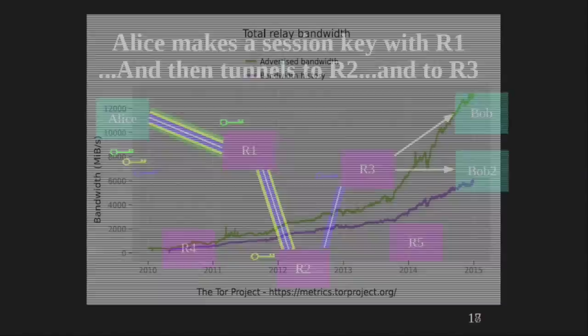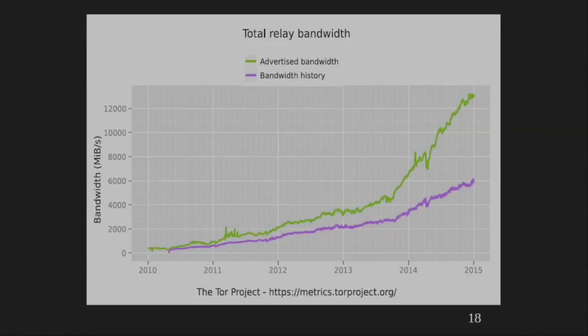We have about 7,000 volunteer relays out there right now all around the world. The question is not how many relays there are, but how much capacity there is, because we have millions of users trying to browse the web or watch YouTube. Right now we have something like 12 gigabytes per second of capacity — comparable to Wikipedia in terms of the amount of traffic we push on the internet.